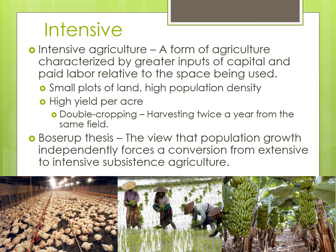Intensive agriculture, on the other hand, is a form of agriculture characterized by greater inputs of capital and paid labor relative to the space being used. Intensive agriculture typically requires significantly greater inputs either of labor or money. As a result, intensive agriculture typically occurs closer to large numbers of people. This in turn makes land more expensive, so plots of land tend to be smaller, and most importantly, output is higher per acre. Some examples include rice farming, market gardening, plantation agriculture, and mixed crop and livestock.